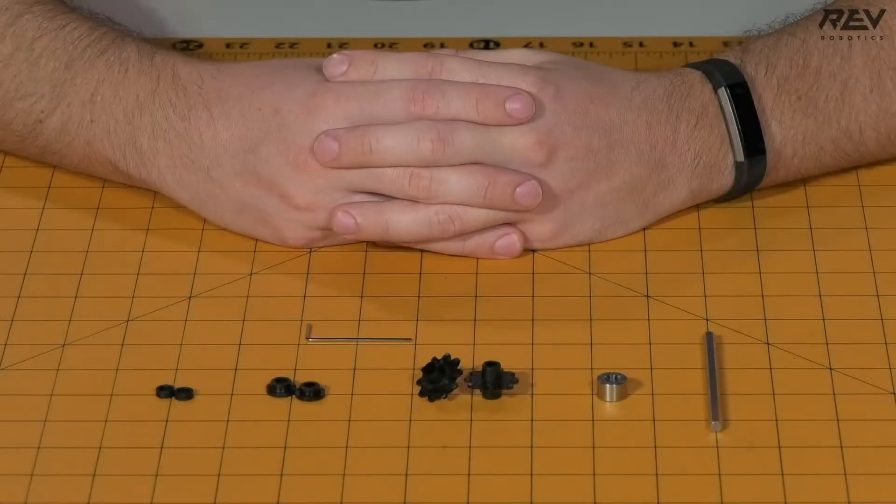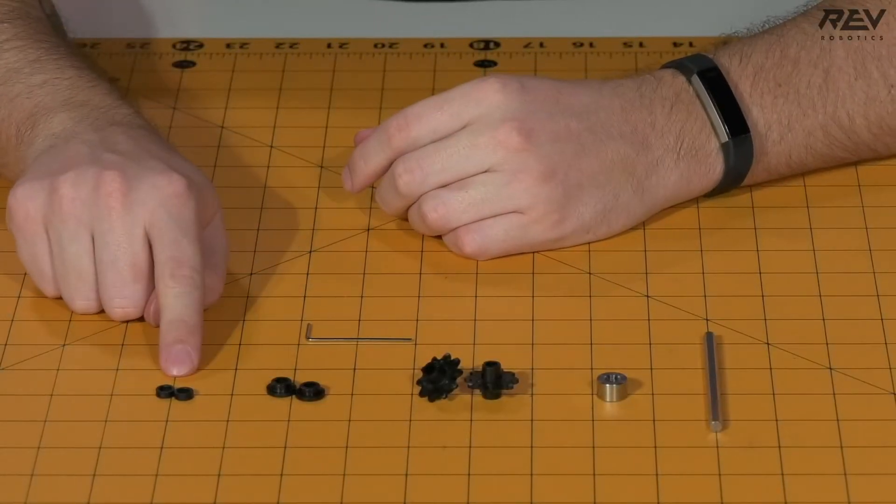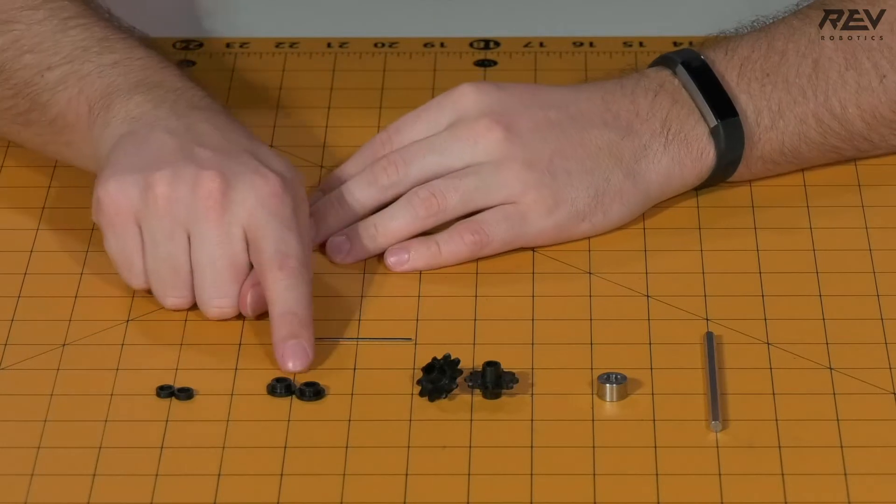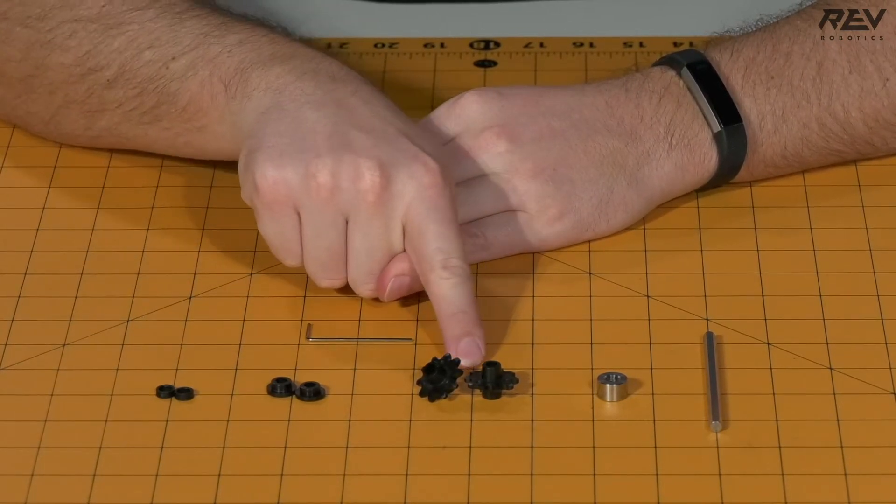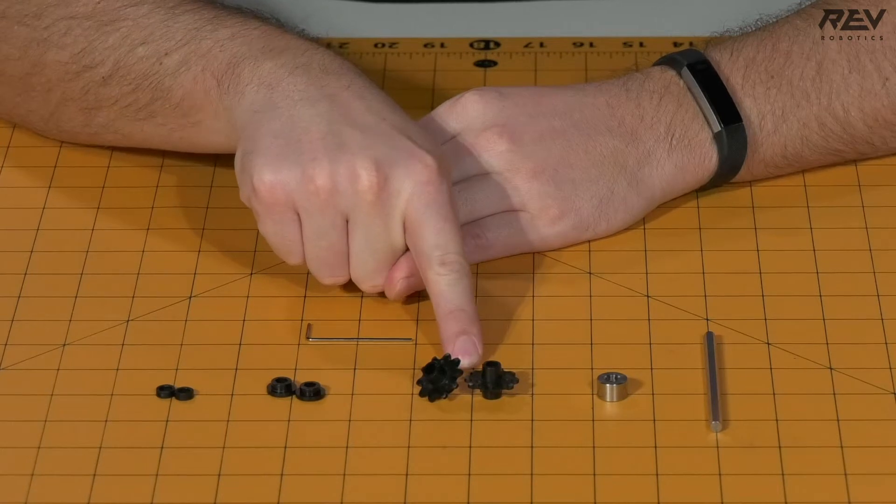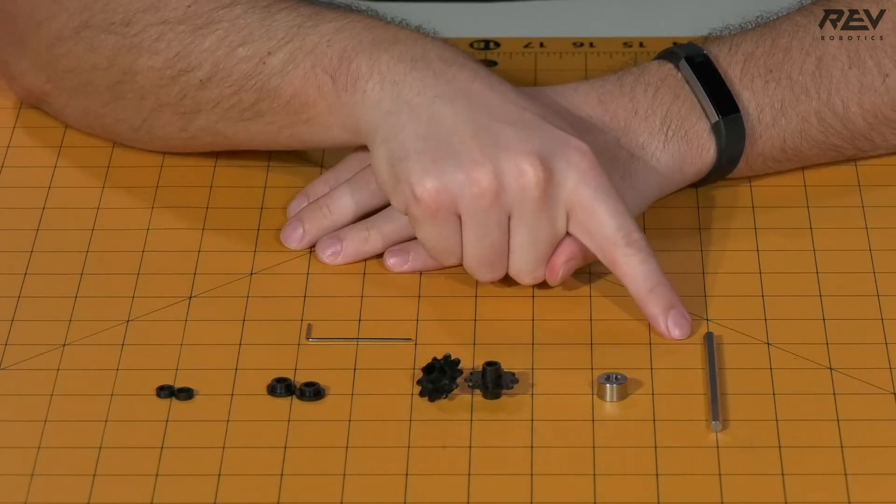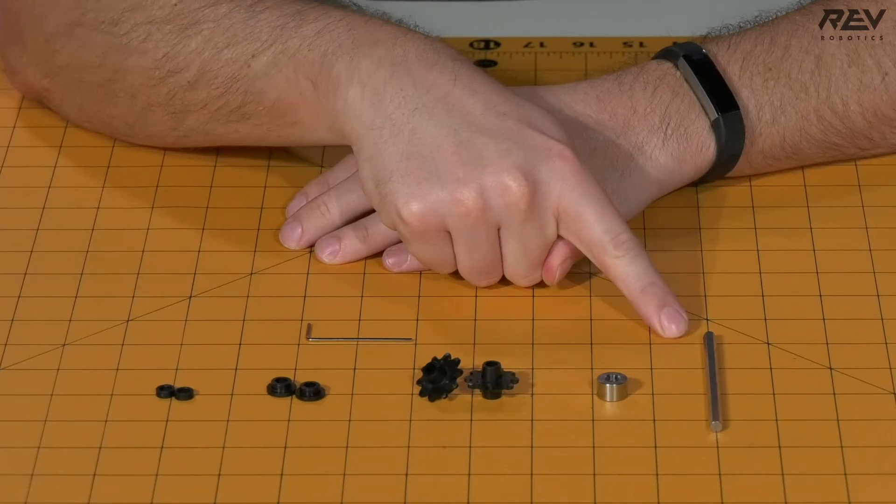We are building the double sprocket shaft assembly. For this step, you will need two 3mm spacers, two short through-bore bearings, two 10-tooth number 25 sprockets, a shaft collar, a 90mm length of 5mm hex shaft, as well as a 1.5mm Allen wrench.